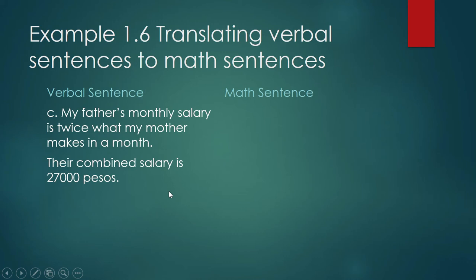Their combined salary, obviously, it's addition. So this is how you put it. So if y is your mother's salary in a month, twice y is your father's salary. So this is how you write the math sentence for this part.